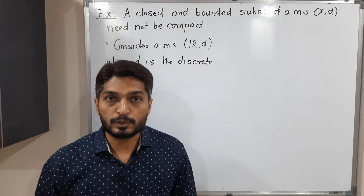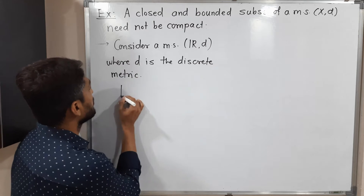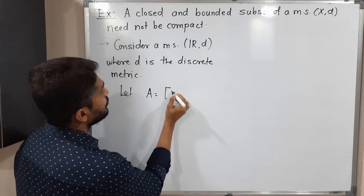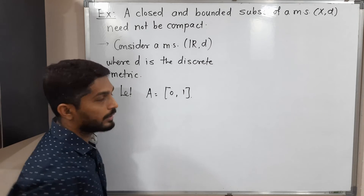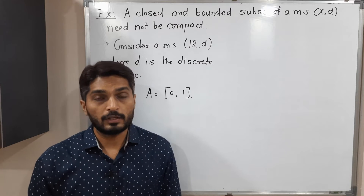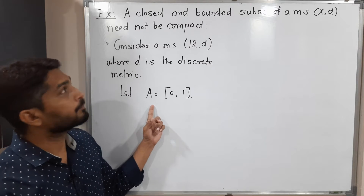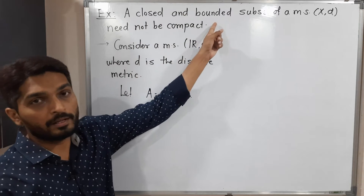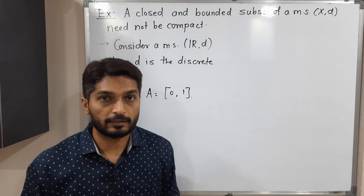Let us consider one subset of R. Let A equal the closed interval [0, 1]. We are going to prove that the set A is closed and bounded, and after that we will prove that it is not compact.